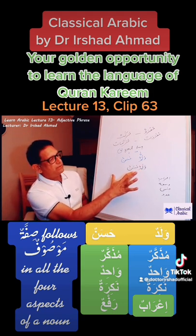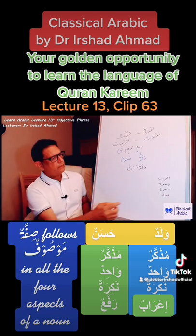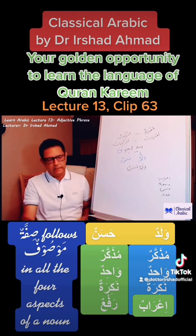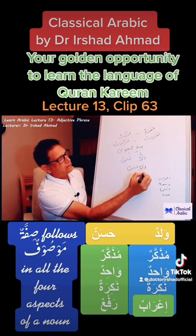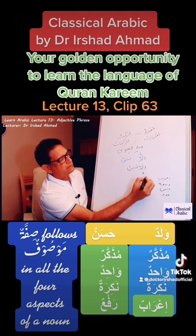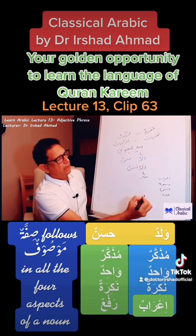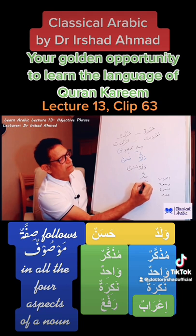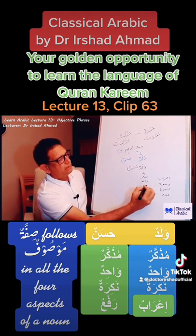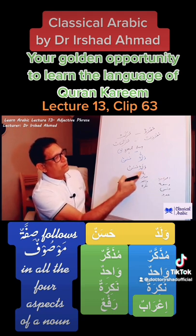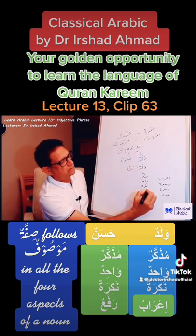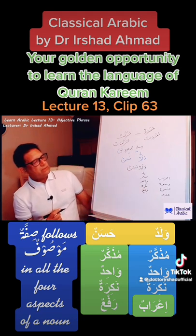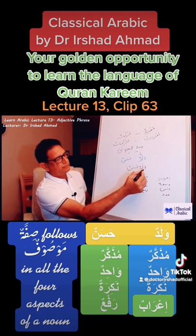We have made our first phrase which is Waladun Hasanun — a good boy. In this case Waladun is Muzakkar. From the Jins point of view it is Muzakkar; from the Adad point of view it is Wahid; from the Usa point of view it is indefinite, which is Nakhira, not Marifa; and from the I'rab point of view this is in Rafa — Waladun is in Rafa.